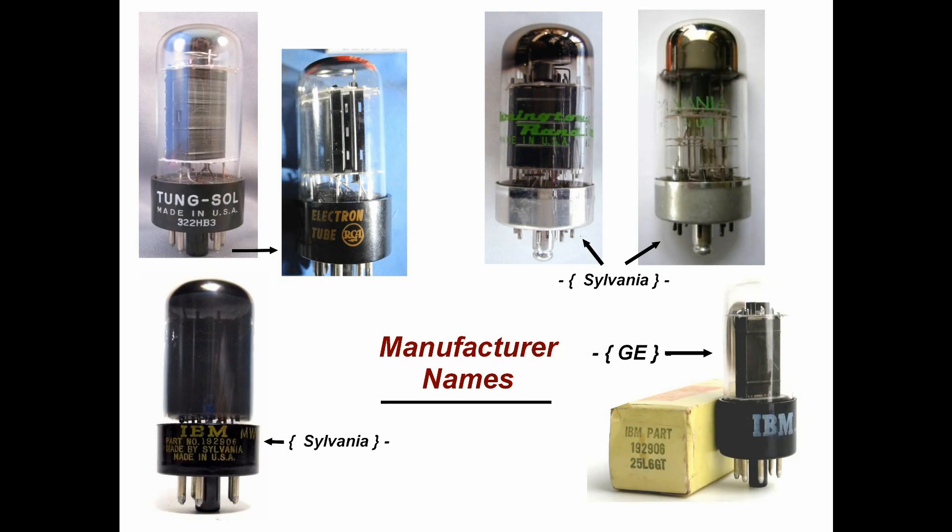It was a common practice for factories to source tubes from each other and relabel them. Some tubes made by Tung-Sol were sold as RCA tubes. Many RCA-made tubes were sold under the Sylvania label. Sylvania often made tubes for GE, and GE in turn made tubes labeled IBM, and so on.